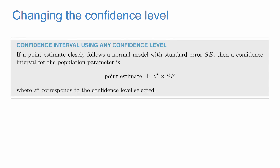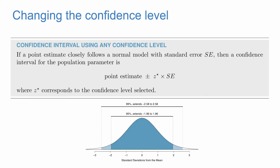As a general rule for changing the confidence level: if a point estimate closely follows a normal model with a standard error SE, then a confidence interval for the population parameter is the point estimate plus minus Z* times the standard error, where Z* corresponds to the confidence level selected. So for a 95% confidence interval, that was 1.96, and for a 99% confidence interval, it was 2.58.